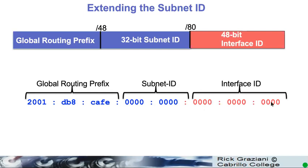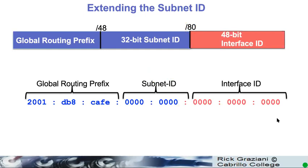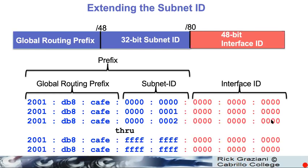So, we've actually shortened our interface ID by one hex digit. This was part of the interface ID when we're slash 64, but we've changed it to a slash 80. So, this becomes part of our prefix, our network prefix. So, here's our subnet ID — it's again that easy. We just count in hex. That's all there is to it.